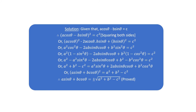Rearranging to the opposite side: a² plus b² minus c² equals a² sin² θ plus 2ab sin θ cos θ plus b² cos² θ. The right side is a plus b whole square, so a cos θ plus b sin θ whole square equals a² plus b² minus c². Therefore a sin θ plus b cos θ equals plus or minus root over a² plus b² minus c².